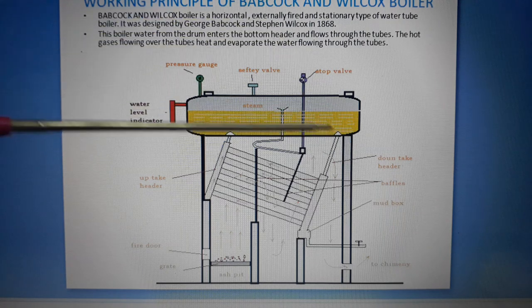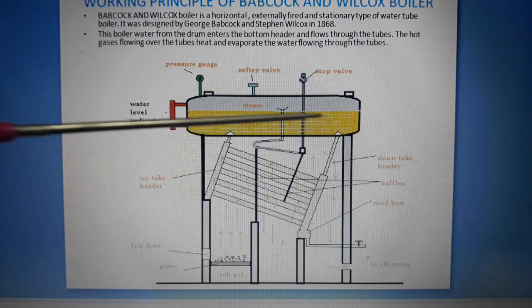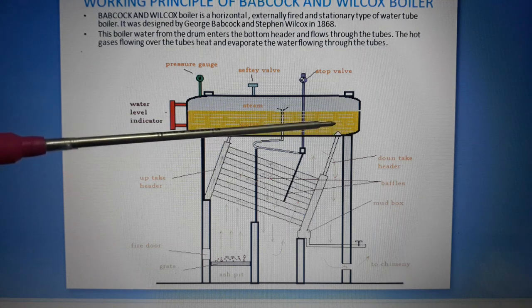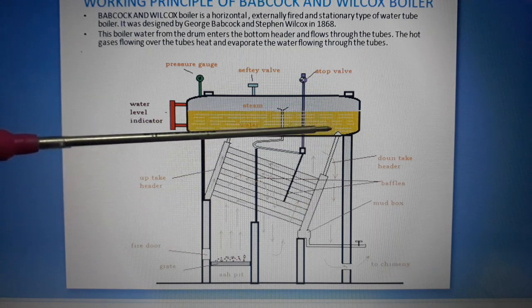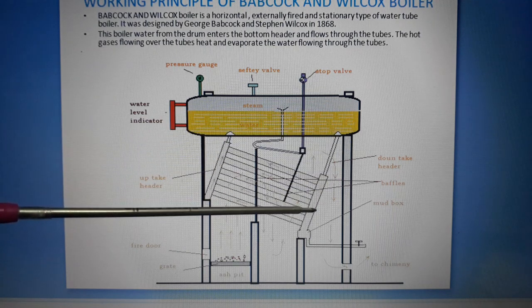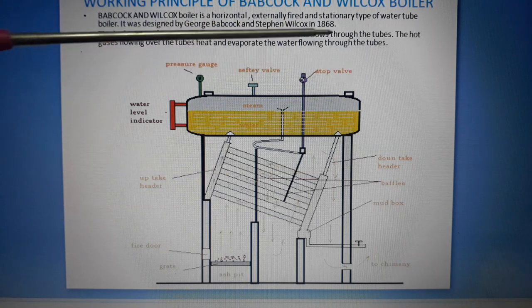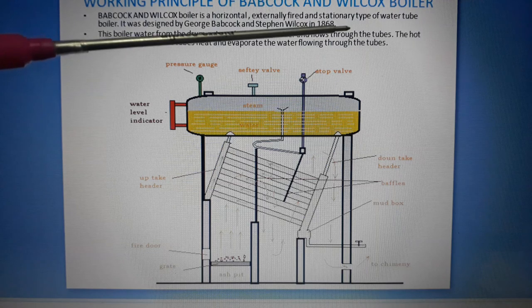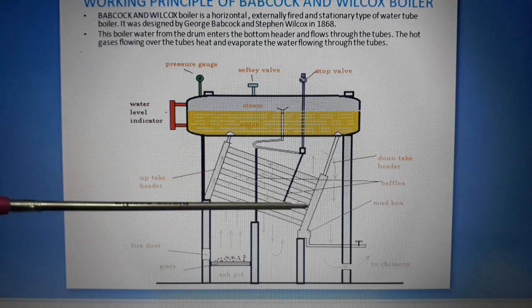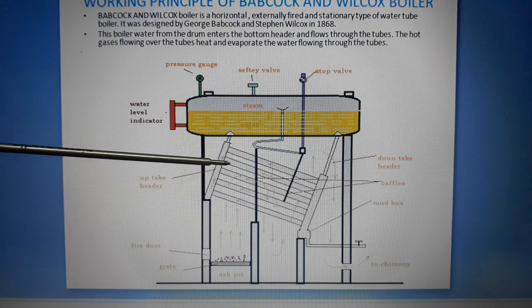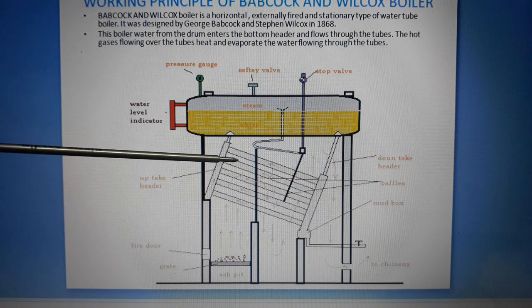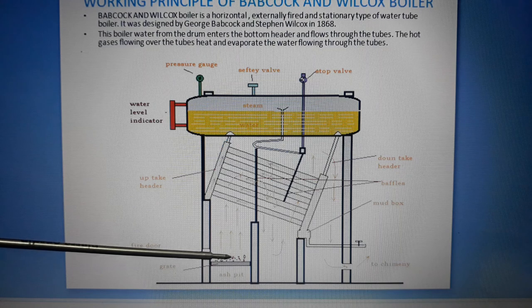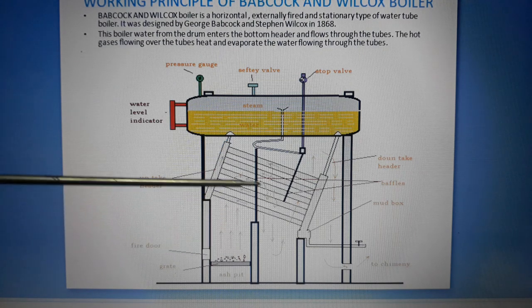In this boiler, water from the drum enters the downtake header. The water flows through the downtake header and then flows through the tubes.